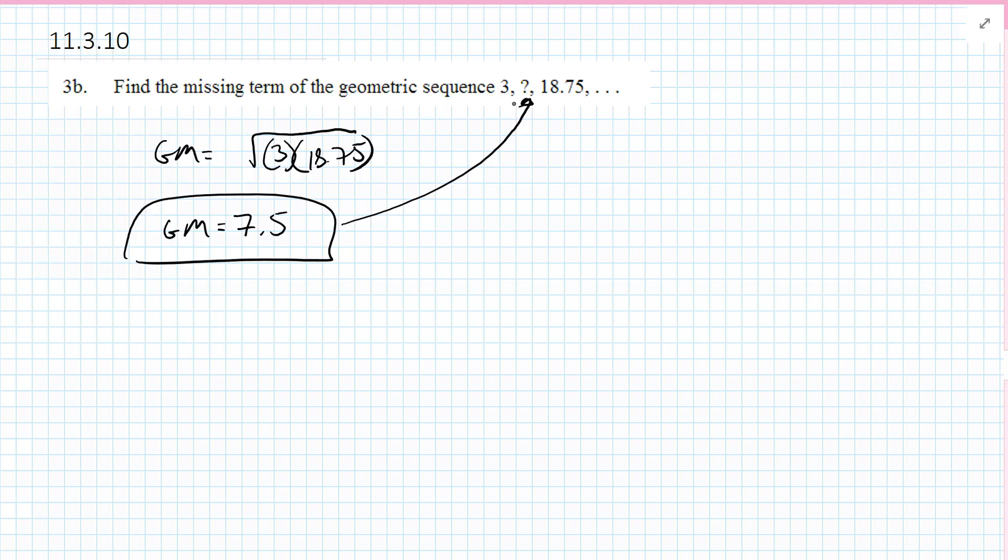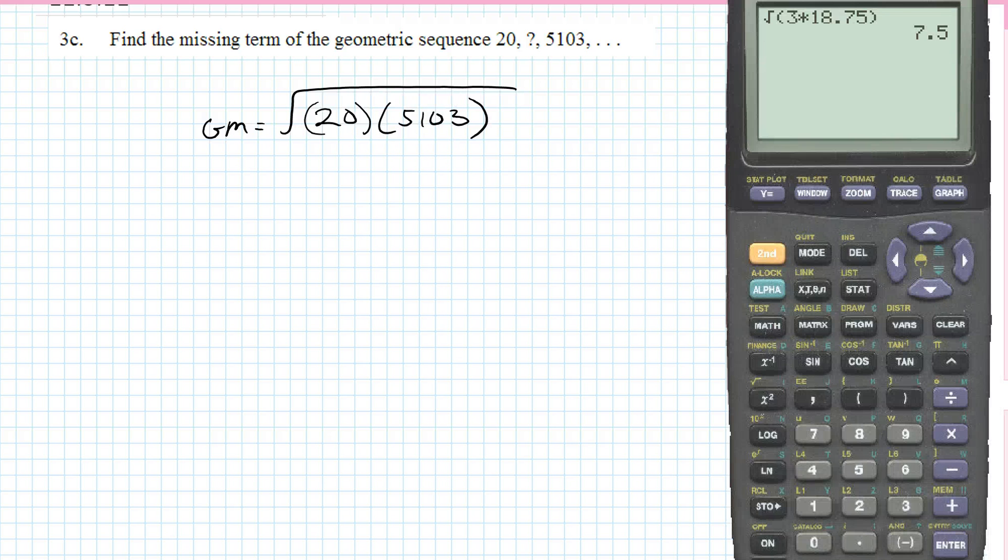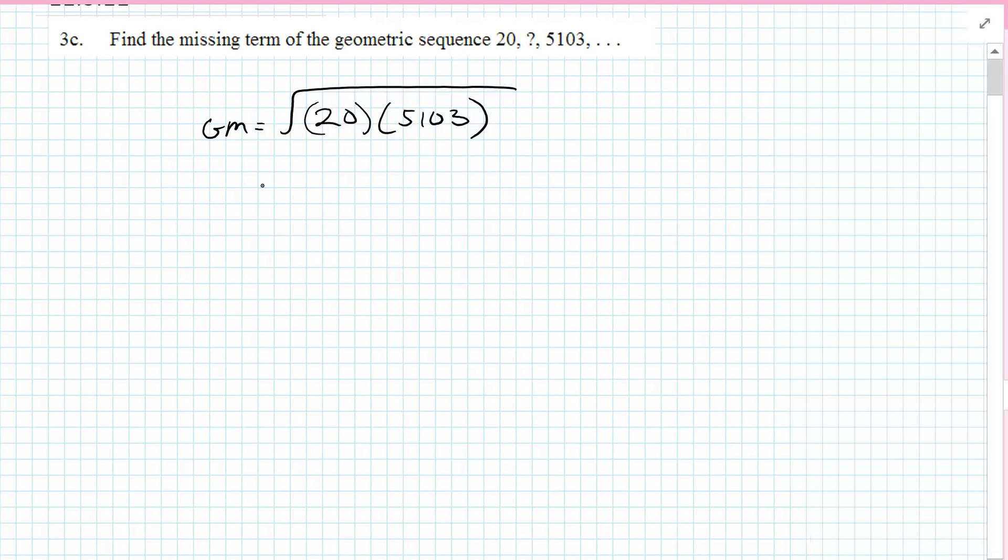Find the missing term of this geometric sequence. It's 20 and 5.103. So the geometric mean is going to be the square root of 20 times 5.103, the job for the handy-dandy calculator. Square root of 20 times 5.103, close. 319.47. There you go.